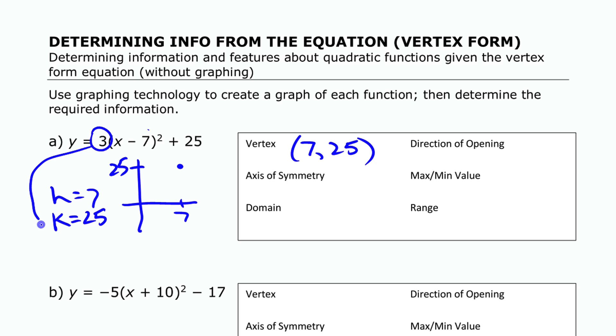We can also look at the value of a, that leading coefficient there. It's 3. Now the thing for what we're doing that's important is the fact that it is positive because that's going to tell us that the direction of opening is up. It opens up like a bowl that's right side up.